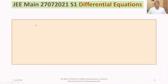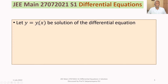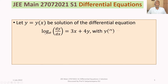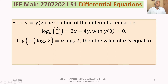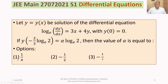The problem is: let y = y(x) be the solution of the differential equation log(dy/dx) base e equals 3x + 4y, with y(0) = 0. If y(−2/3 · ln 2) = α · ln 2, then find the value of α.